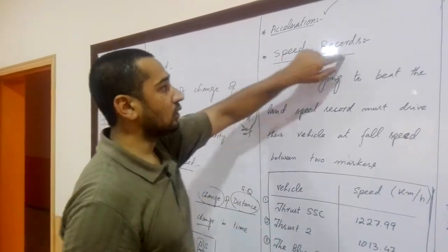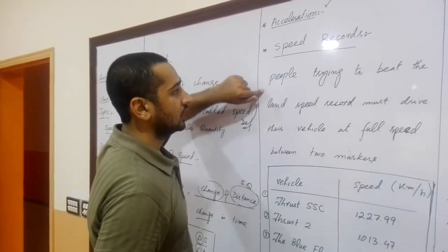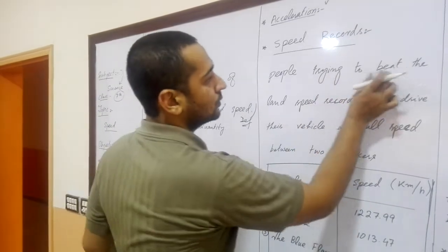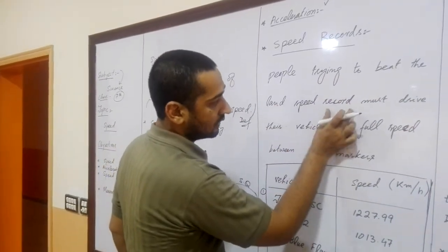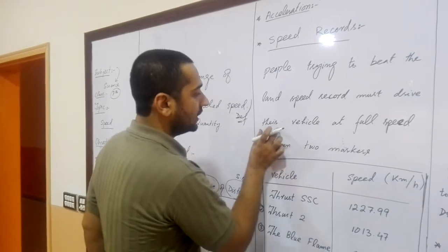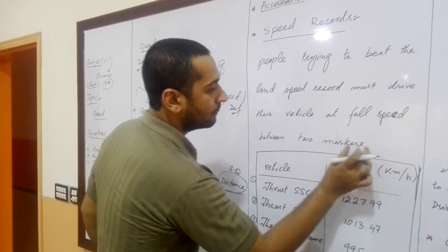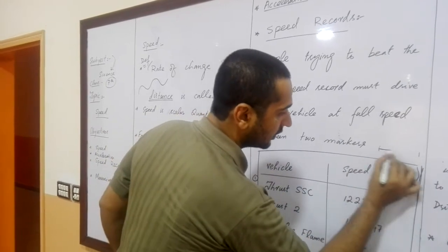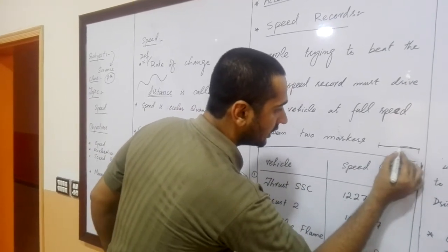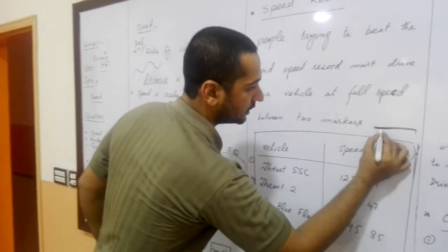So the speed records. People trying to beat the land speed record must drive their vehicle at full speed between two markers. From here to here, full speed. Full speed of vehicle.